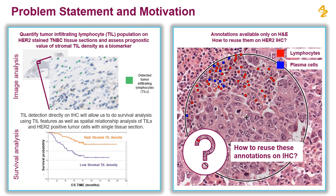We want to use these annotations on H&E directly to train a model which is applicable on HER2-stained IHC images. We will demonstrate a domain adaptation based system which is able to transform the H&E image into a synthetic IHC HER2 image and reuse these annotations. We would eventually train a model to detect TILs applicable directly on HER2-stained IHC sections, using only annotations available on H&E to train and validate the model.